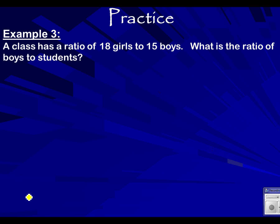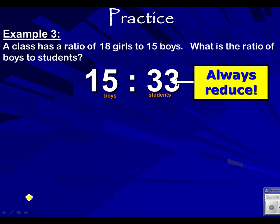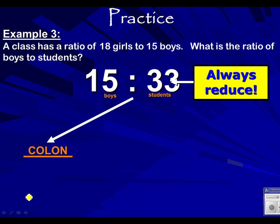Next example: a class has a ratio of 18 girls to 15 boys. What is the ratio of boys to students? Well, we know there are 15 boys. For students, you have to do a little arithmetic — just add 18 plus 15, which gives you 33. So always reduce: 15 to 33. What does 15 and 33 divide by? Looks like three again. So 15 divided by three is five, and 33 divided by three is 11. So five to 11.